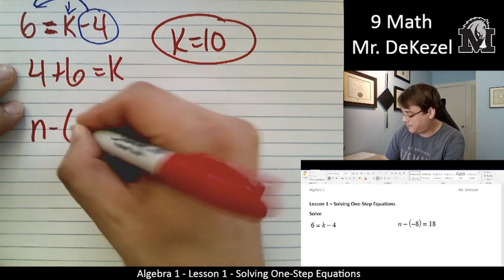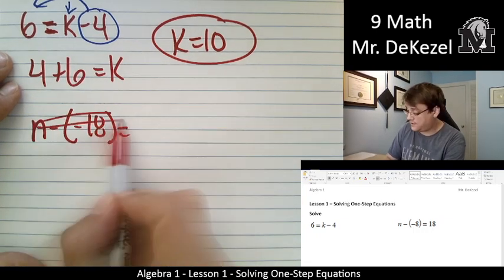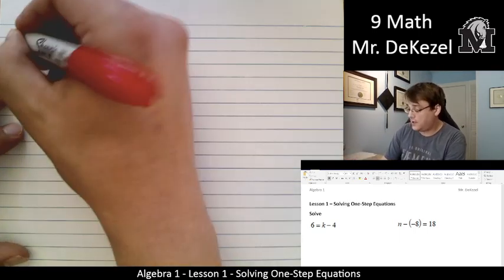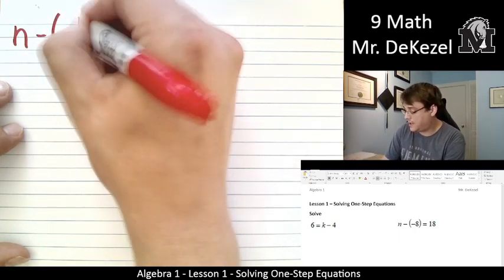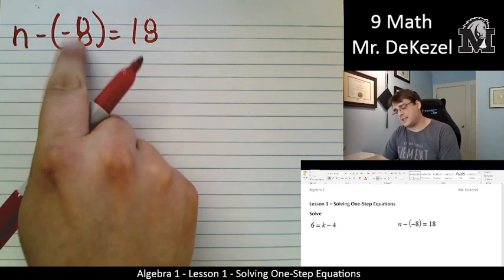We have n minus a minus 18. Sorry, let's just scratch that off and start again. Why not? We've got lots of paper. I got a new one a couple of lessons ago. n minus a minus 8 equals 18. If we're minusing a minus, that's just adding.